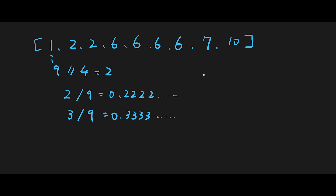Starting from index zero, the current number is 1. We compare it with the number two steps ahead — index 2, which is 2. Since 1 does not equal 2, it's not the answer. Next, current number is 2 and the number two steps ahead is 6, so 2 is not the answer either.